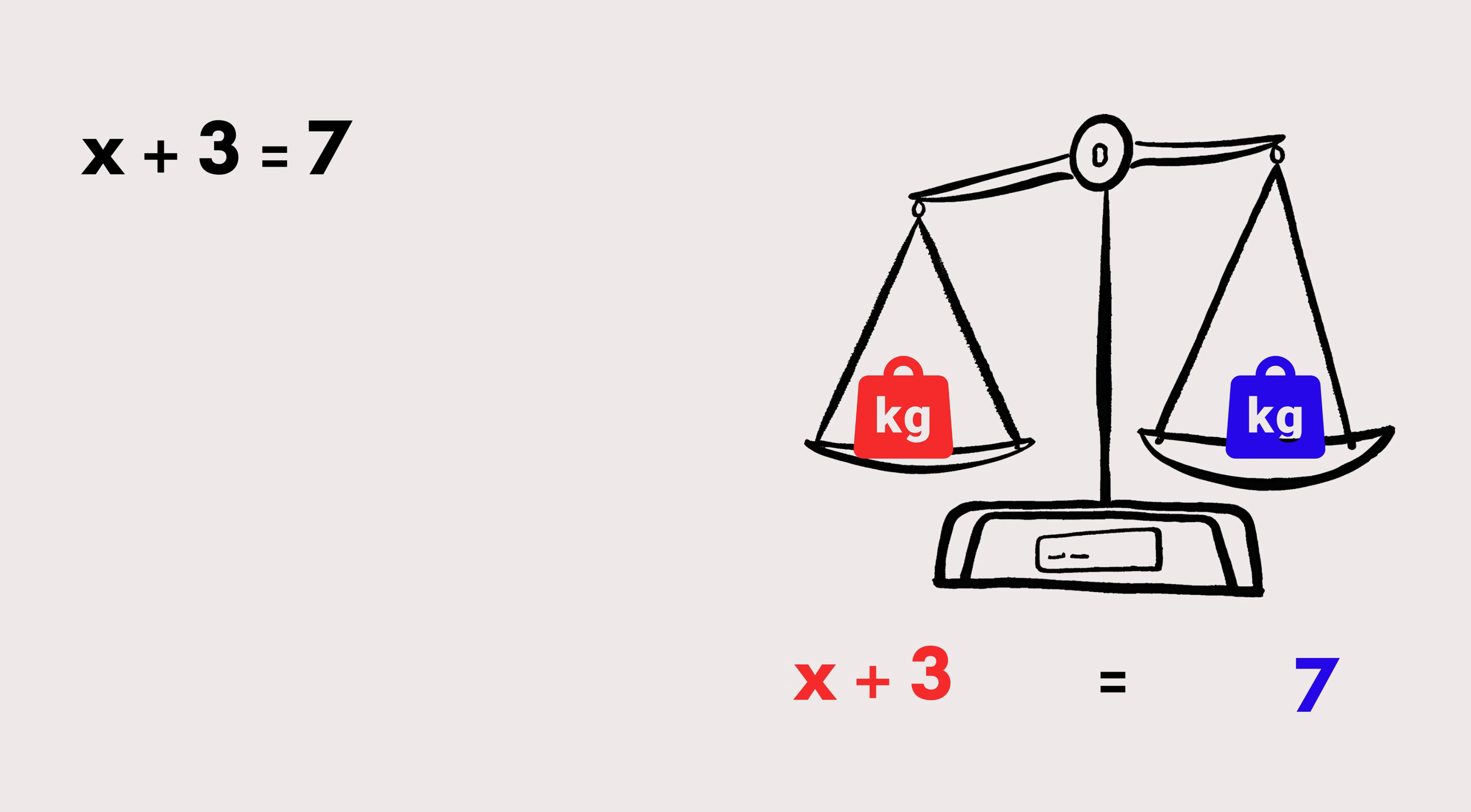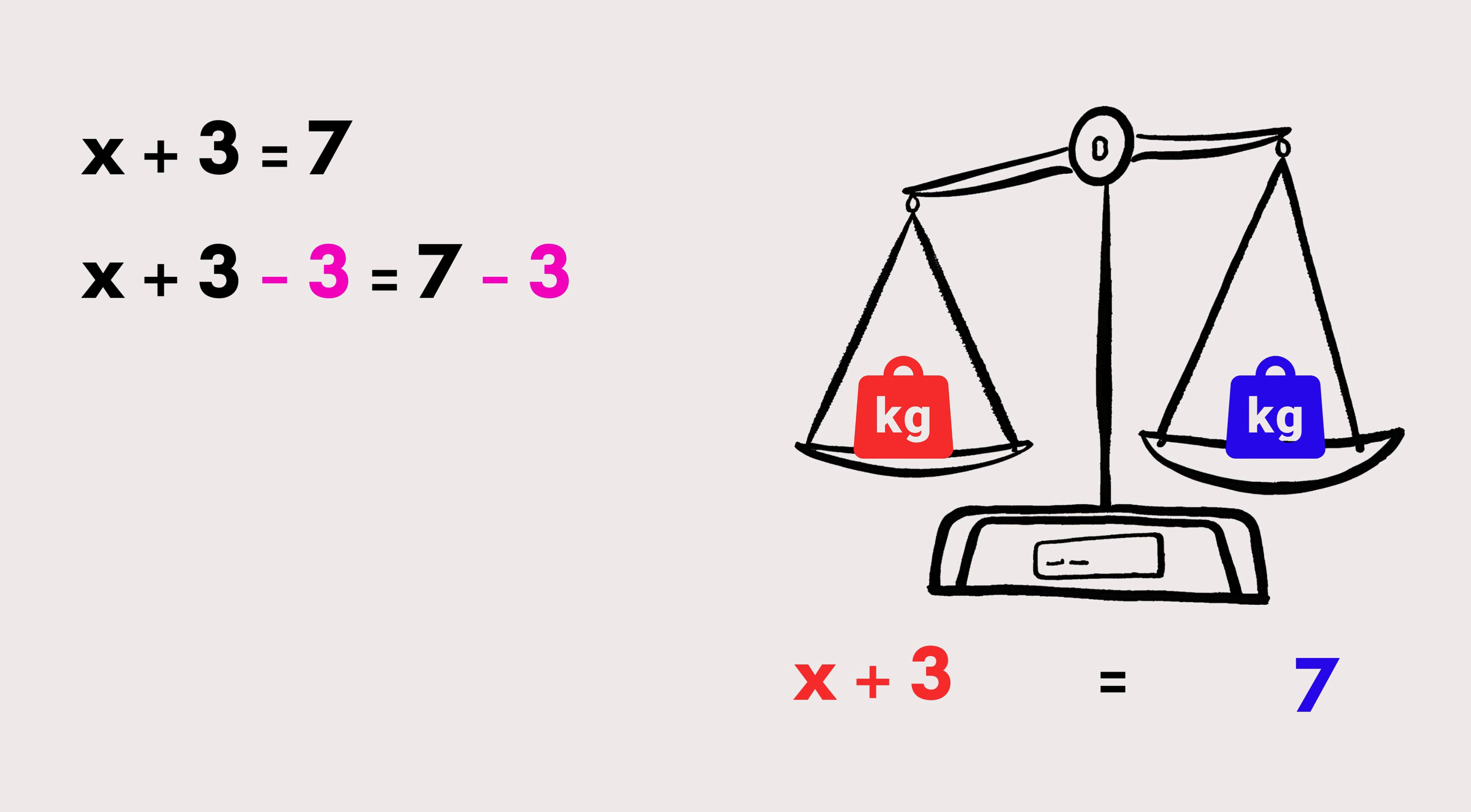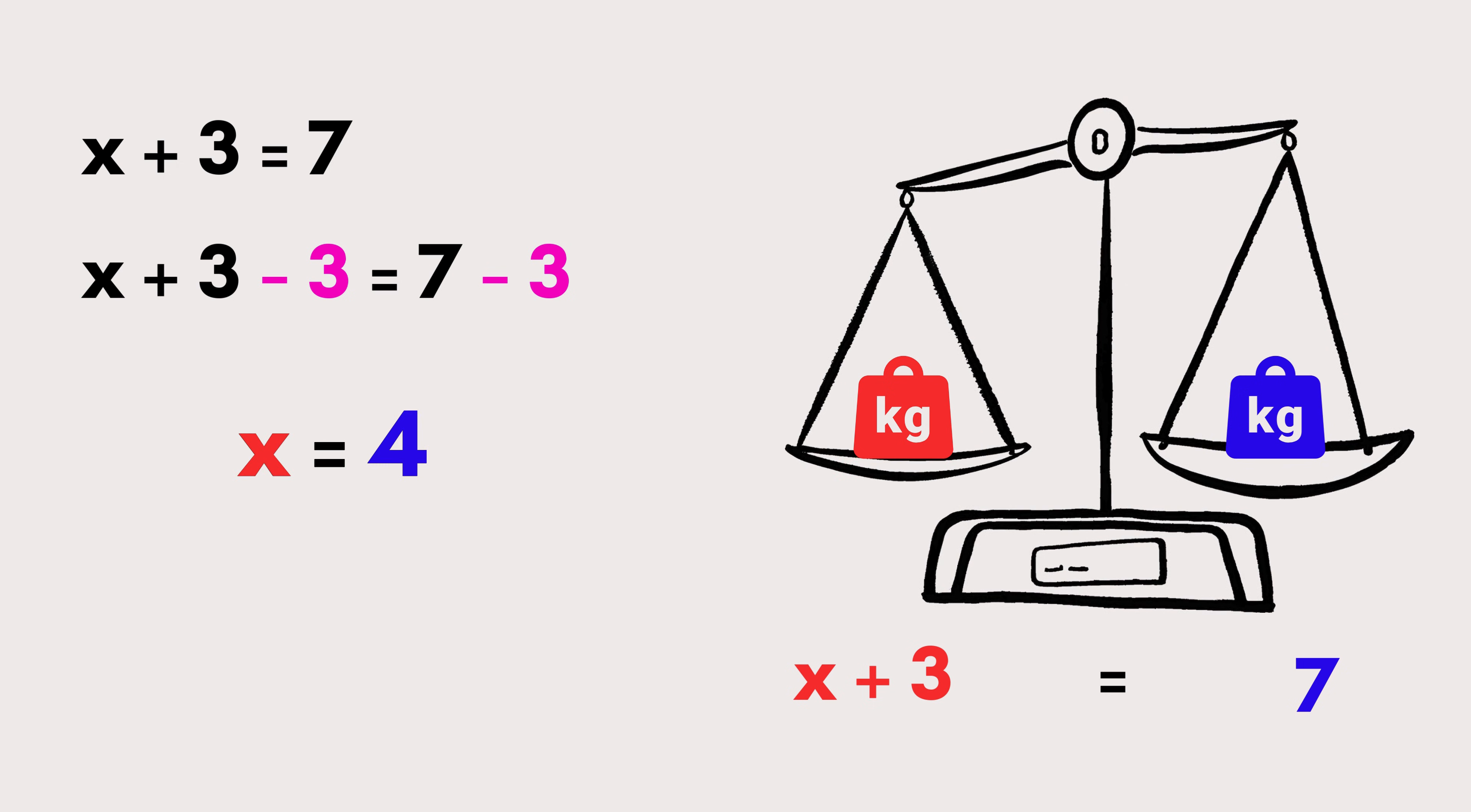For example, X plus 3 equals 7. To solve this, subtract 3 from both sides. X plus 3 minus 3 equals 7 minus 3. And simplifying, we finally get X equals 4.